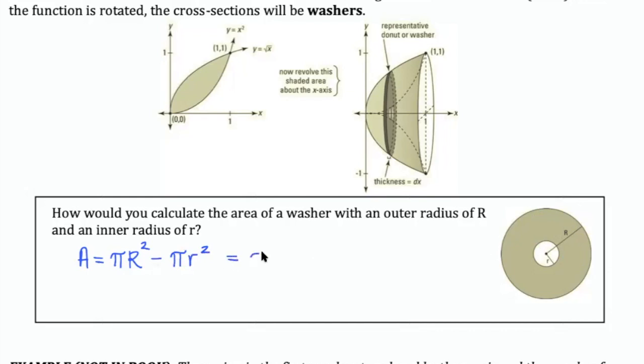And we can factor the pi out. It's a common factor. So this is going to be how we calculate the area of a washer.